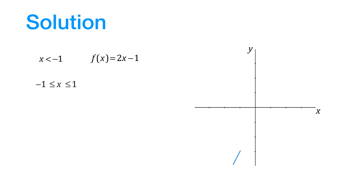Also, when x is between minus 1 to plus 1, the function is given by x squared plus 1, which is a parabola, and we can sketch it like this.